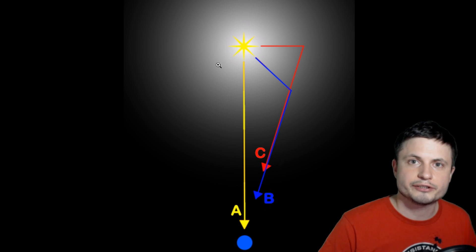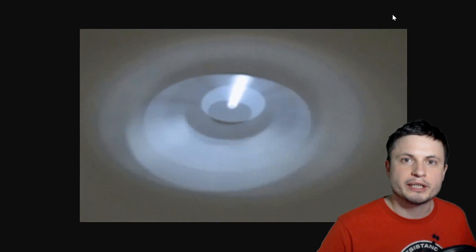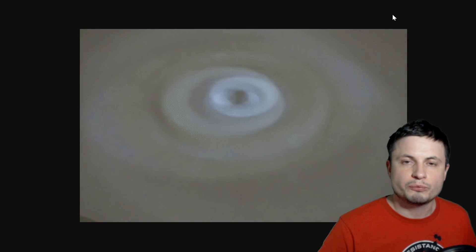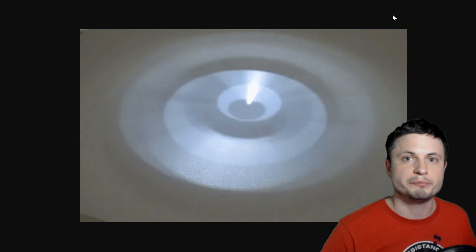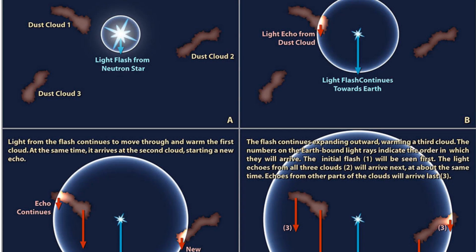as it hits these layers, some of which could be light years apart, it starts generating this effect where we can now start seeing these layers being illuminated. And this illustration from NASA sort of shows you what happens.